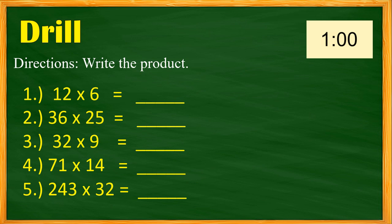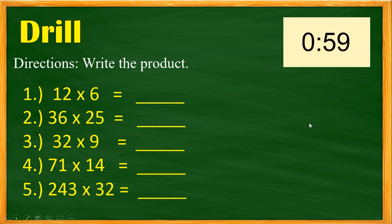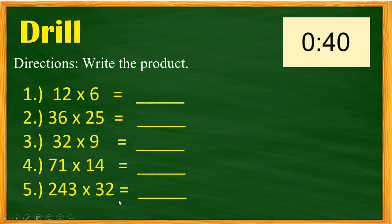Let's start with a drill first. We need to find the product of each question and write the answer in the comment section below. Number one: 12 multiplied by 6. Number two: 36 multiplied by 25. Number three: 32 multiplied by 9. Number four: 71 multiplied by 14. Number five: 43 multiplied by 32. You have one minute — your timer starts now.